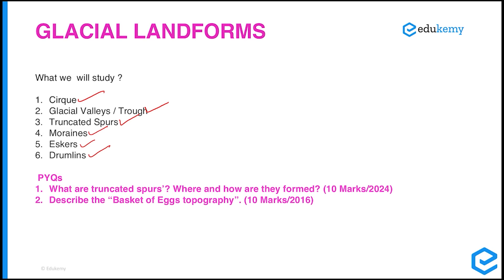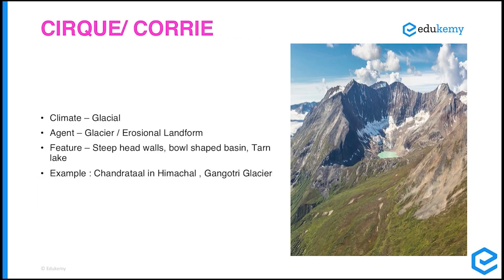Let us glance through some previous year questions. First: 'What are truncated spurs? Where and how are they formed?' — 10 marks, asked in 2024. Second: 'Describe the basket of eggs topography' — 10 marks, 2016.